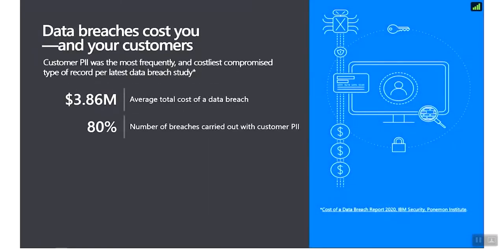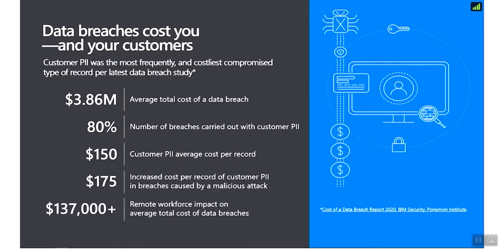Data breaches are a big deal when it comes to building your workloads — a lot of money is involved if your solution is not well-architected. Data breaches can have a real dollar impact for your organization and your customers. Customer PII is the most frequently and costliest compromised record type. The average total cost of a data breach is $3.86 million; 80% of breaches involve customer PII at $150 per record, with a $175 increased cost per record in malicious attacks, plus $137,000 added cost from remote workforce impact. The well-architected framework guides you in designing workloads to help prevent data breaches.